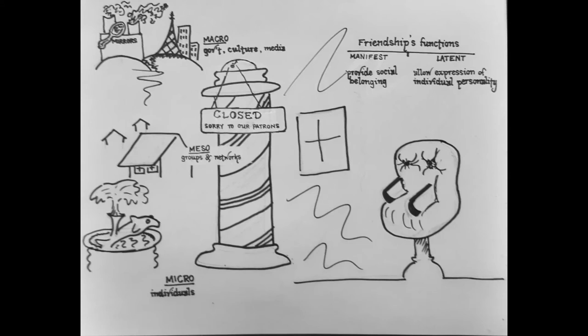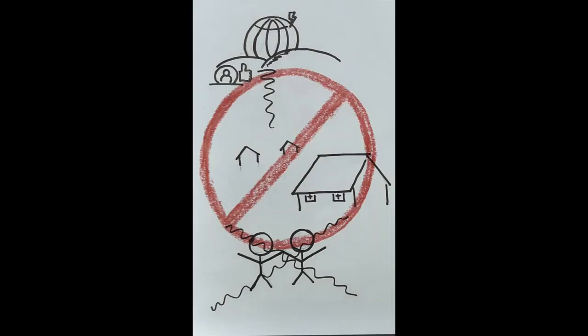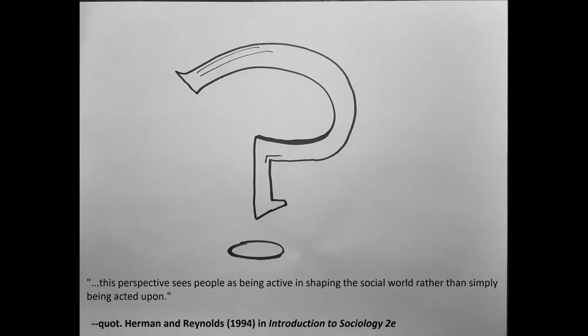So why doesn't the story end this way? I ventured that online social networking technology was functionally putting friendship out of business. Maybe your personal experience contradicts this, but as it turns out, so did my research. If we use symbolic interactionism to understand friendship, one of the central arguments that motivates this way of doing sociology, to use Professor Mike Danza's phrase, is that, quote: "This perspective sees people as being active in shaping the social world rather than simply being acted upon."